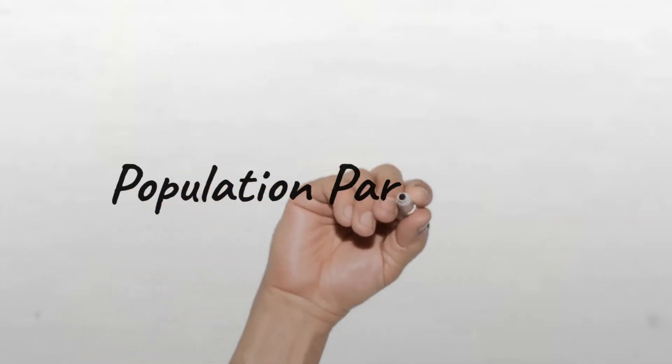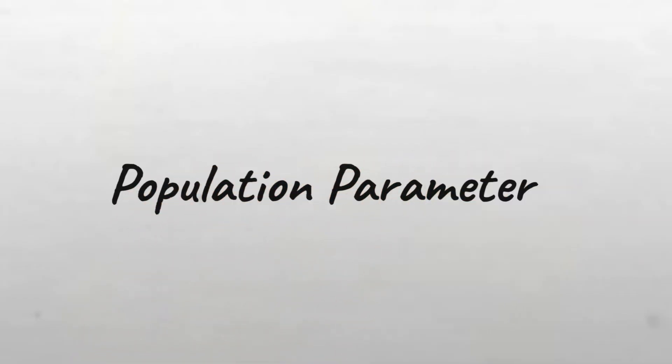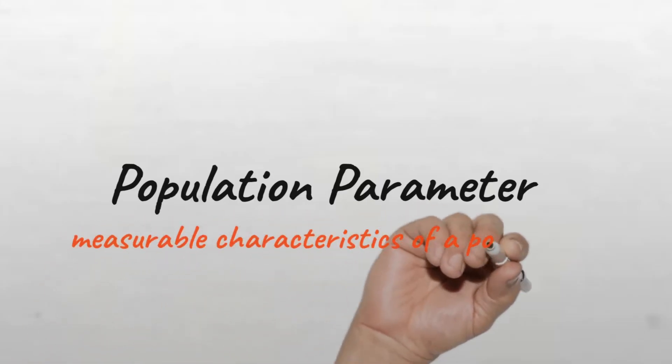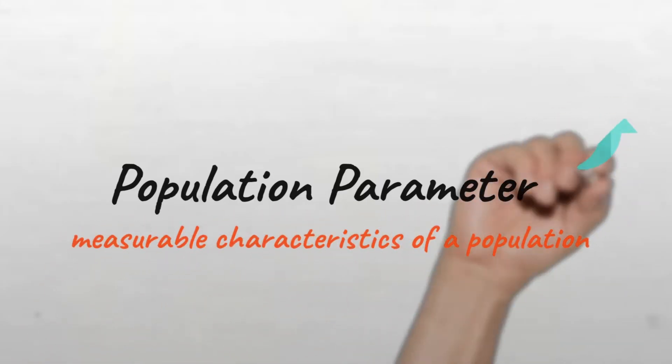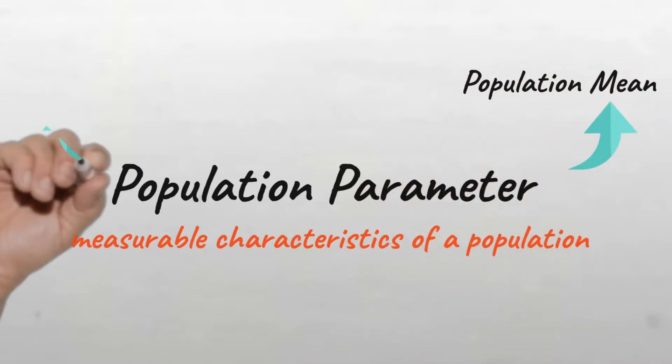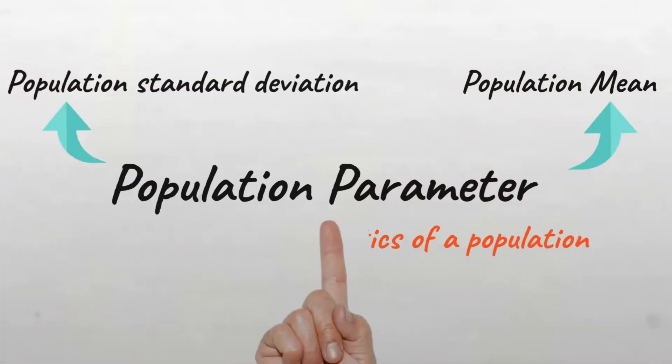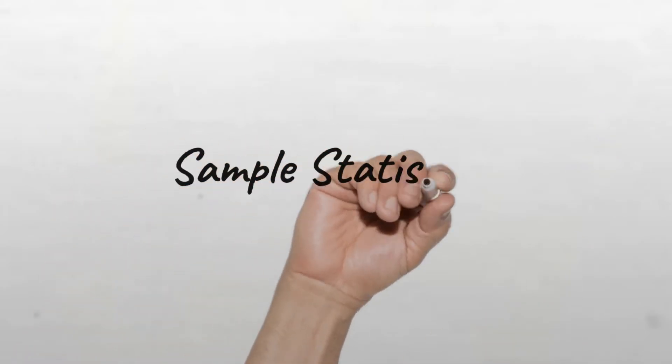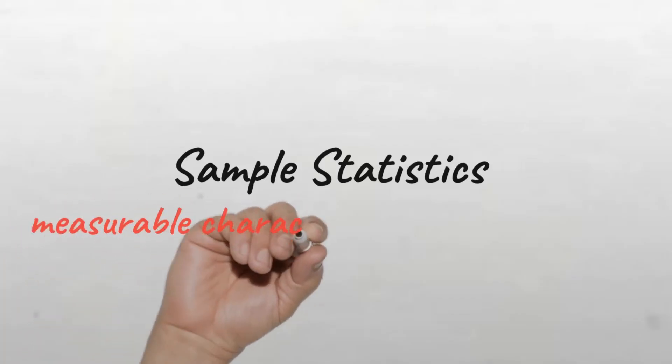You'll often hear statisticians use the term population parameter when referring to any measurable characteristic of a population, like the population mean or the population standard deviation. The term sample statistics is used when the measured characteristic is for the sample.